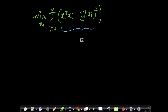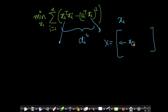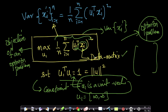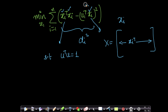You might say this problem does not look exactly like the previous problem. The previous problem was maximization of the sum of (U1 transpose Xi) squared, with the same constraint. Here we have a minimization problem, there we have a maximization problem. But this term — (U1 transpose Xi) squared — is exactly what we have in both. The Xi transpose Xi part is not present in the variance maximization formulation.